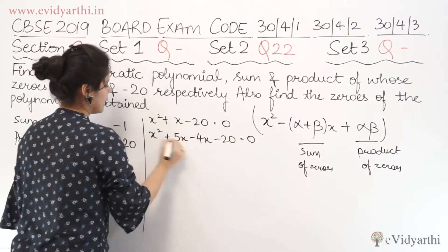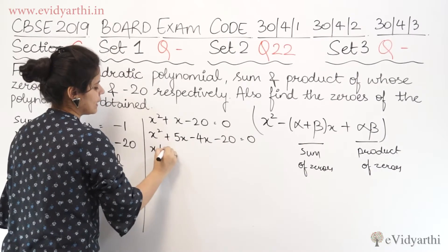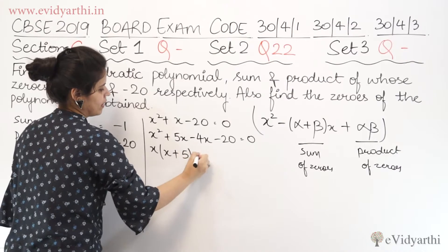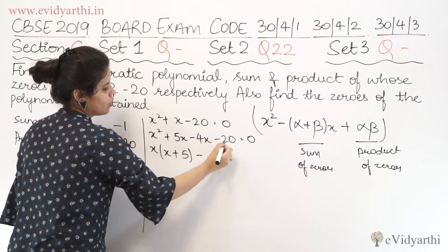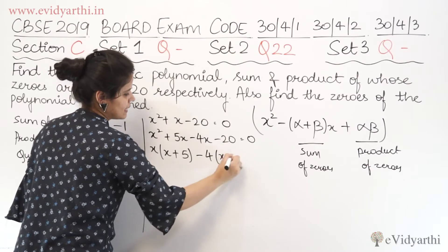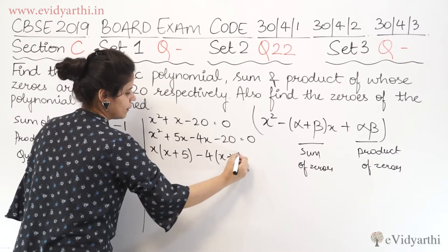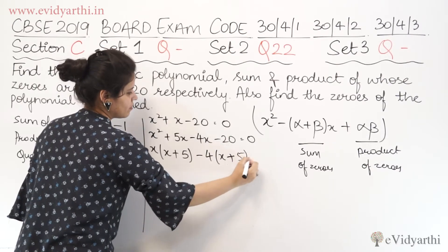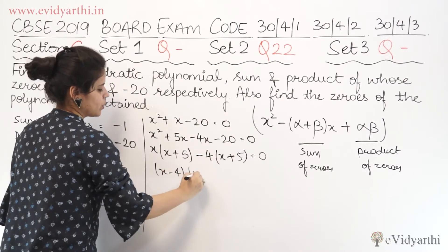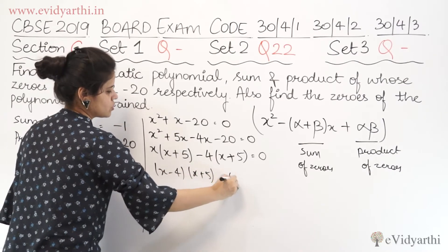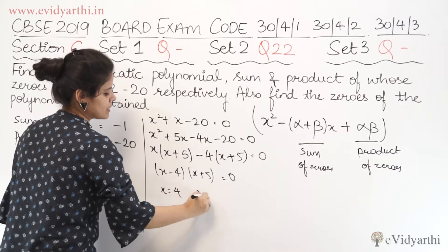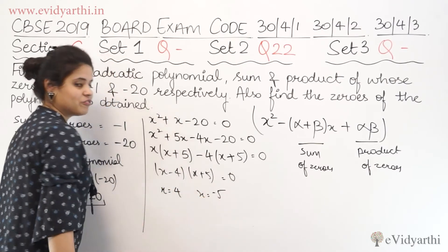Middle term is split. From the first two terms, x is common, giving x(x plus 5). From the last two terms, 4 is common, giving minus 4(x plus 5). So we get (x minus 4)(x plus 5) equals to 0.